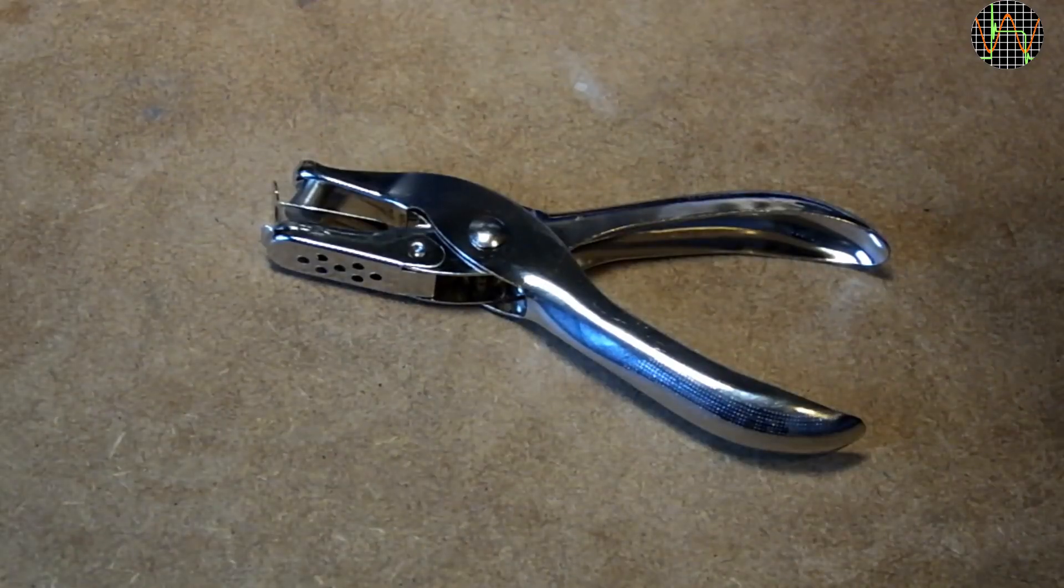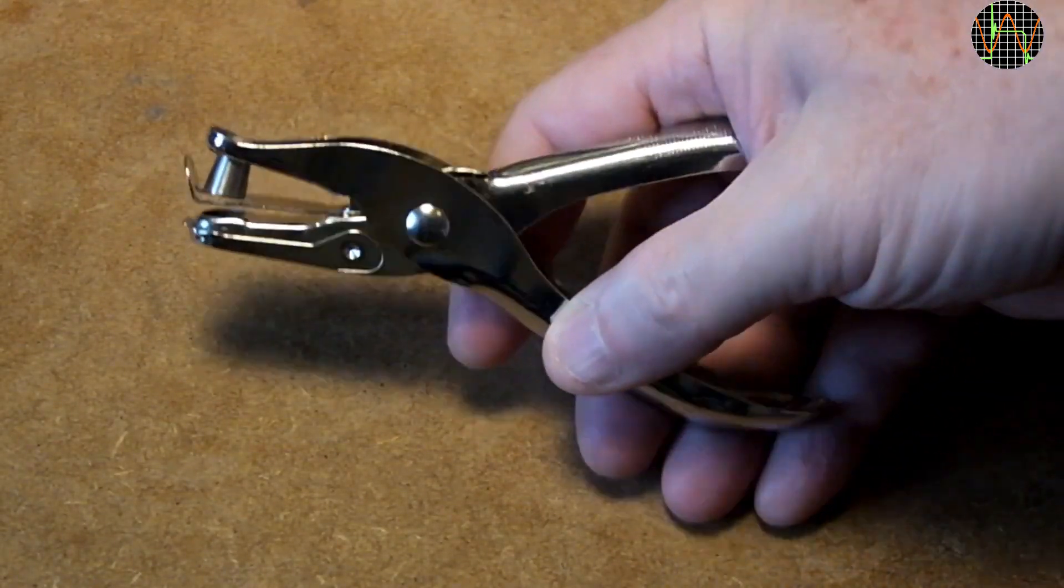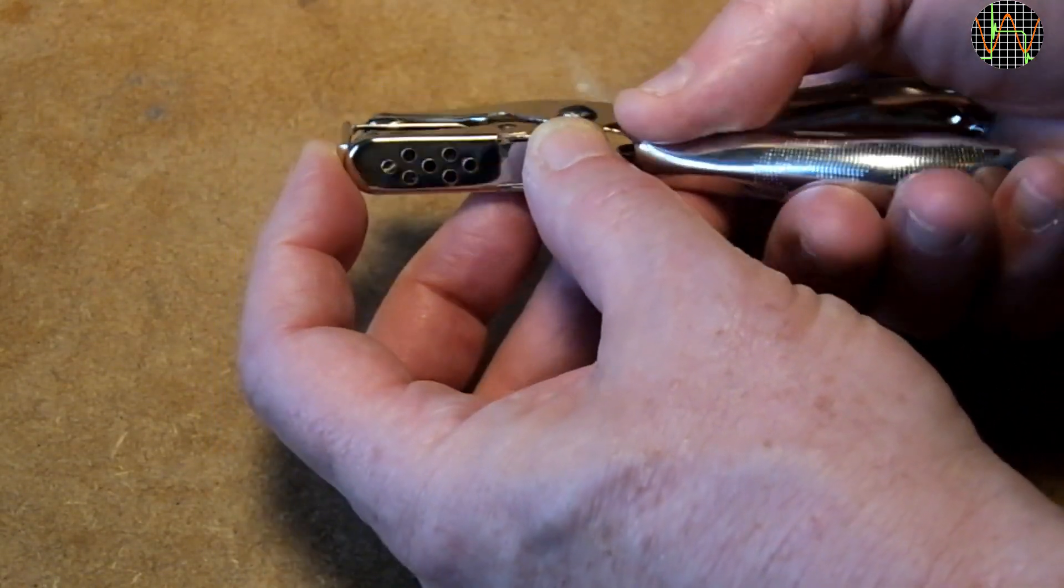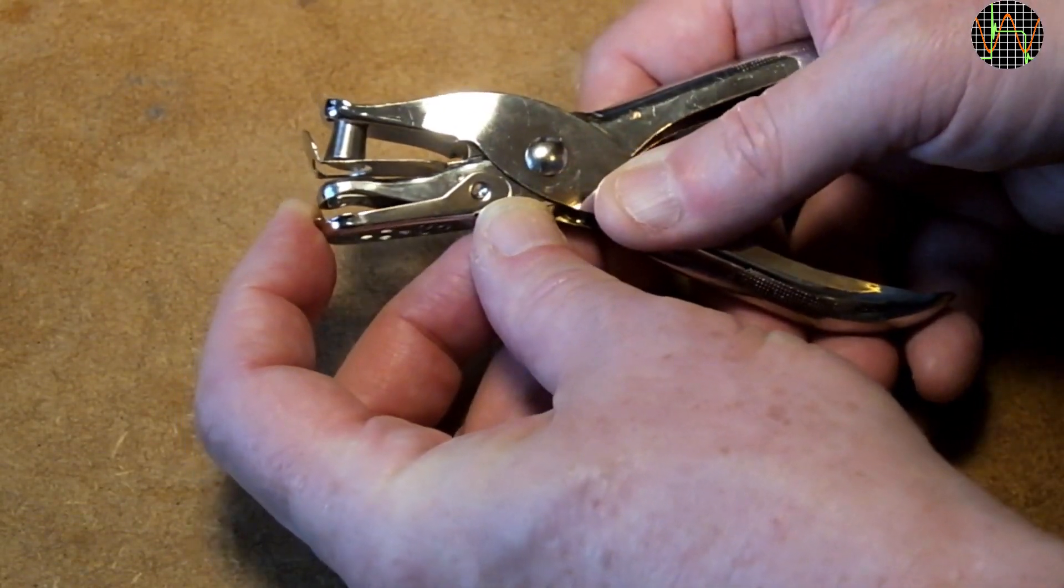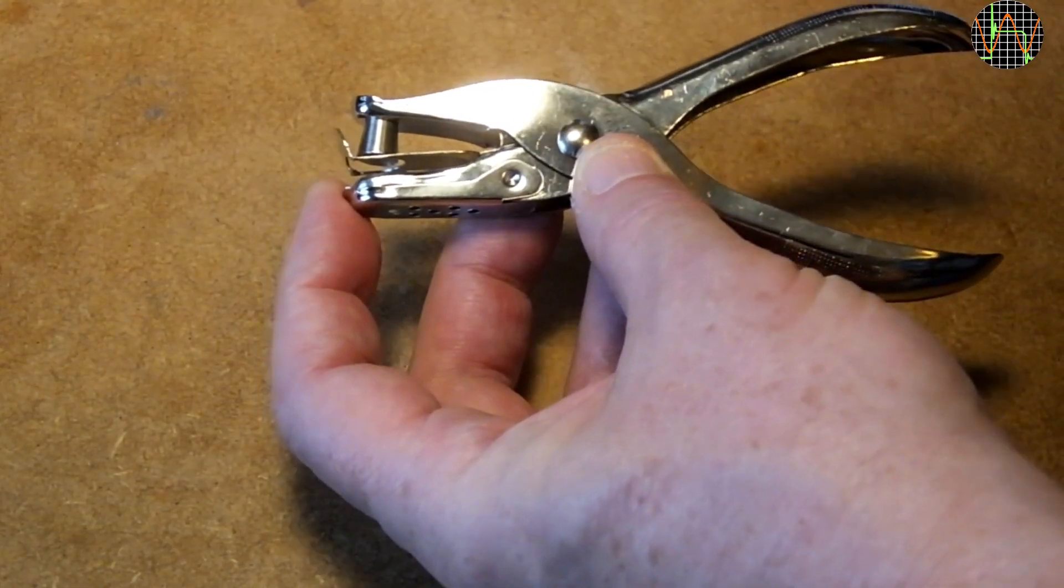I found using a single hole punch like this one works best. They are available in different sizes. This is the largest size I found for 8mm holes. They all have this flap to collect the punched out paper confetti, but I recommend unclipping and removing it.